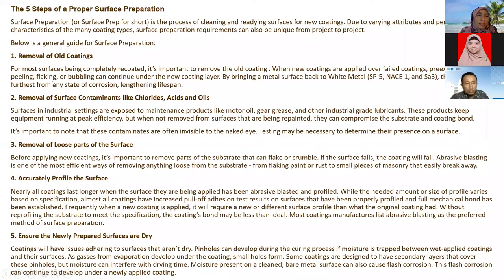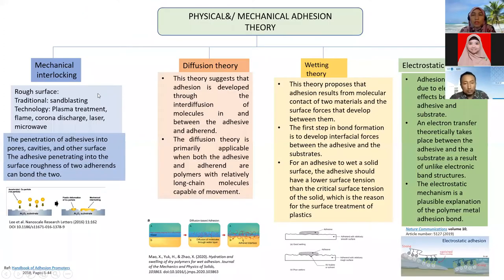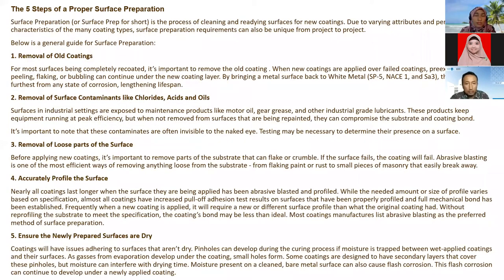Pre-existing checking, peeling, flaking, or bubbling can continue under the new coating layer. Removal of surface contaminants is essential because contaminants will result in what we call weak boundary layers. This coating process also involves removal of loose parts of the surface, accurate profiling of the surface, and ensuring the newly prepared surfaces are dry.